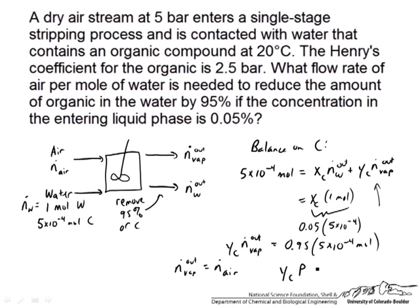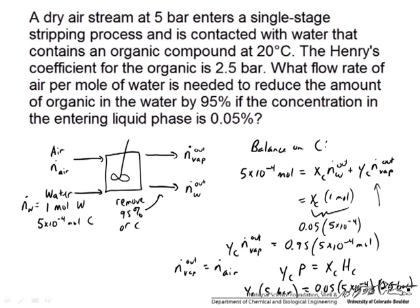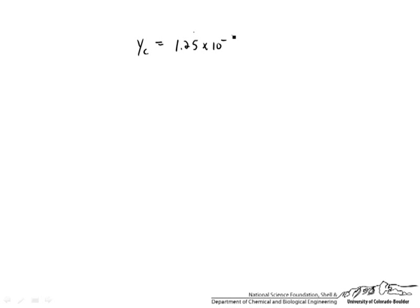Y_C times P equals X_C times H_C, which is our Henry's law constant. Our only unknown here is Y_C. Y_C times the pressure, which is 5 bar, equals X_C — which is 0.05 times 5 times 10 to the minus 4, that is our mole fraction, so 5 times 10 to the minus 4 moles over 1 mole of water — times H_C which is 2.5 bar. Solving for Y_C, we get 1.25 times 10 to the minus 5.